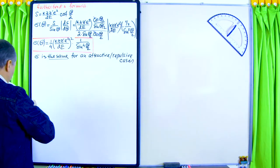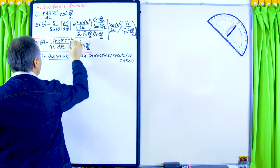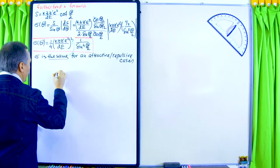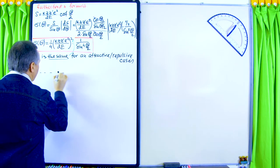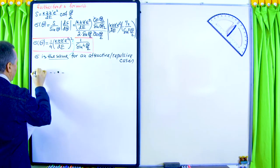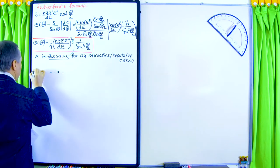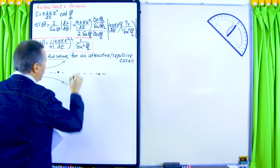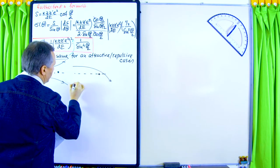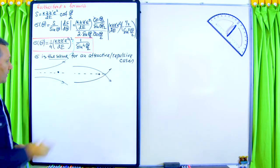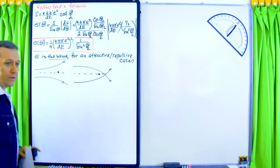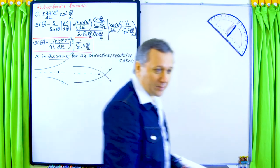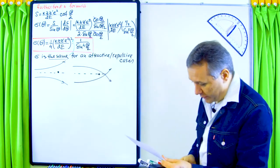Let me sketch the geometric difference: for the repulsive case, the trajectory curves away from the target, while for the attractive case it curves toward it. But again, the distribution of particles on our detectors will be exactly the same regardless. So sigma(θ) is the same for attractive and repulsive potentials, because of that power of two.